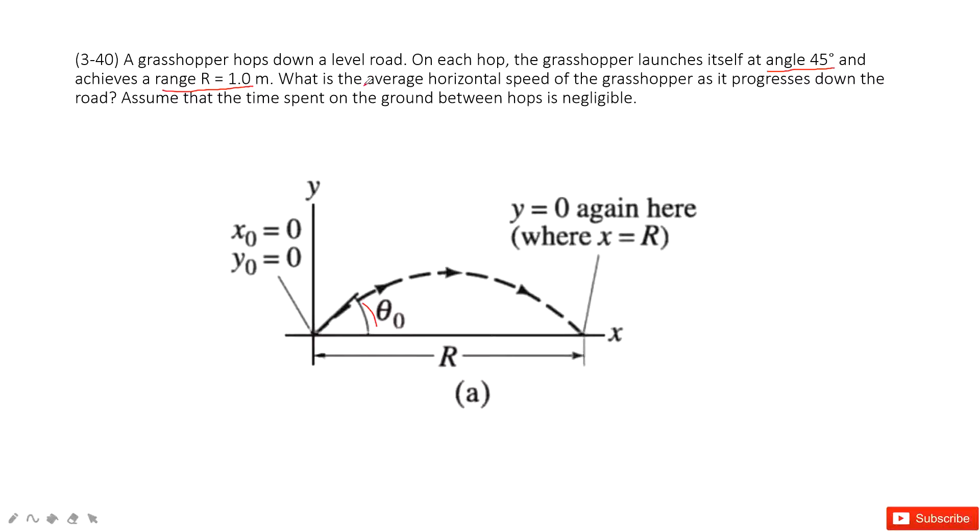And asks you what is the average horizontal speed? So, average horizontal speed. We need to find v0, right?